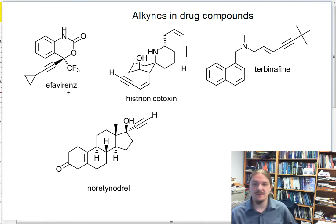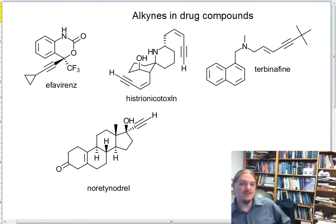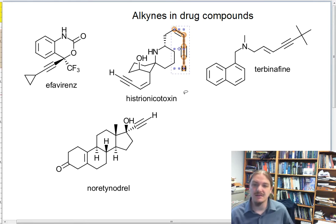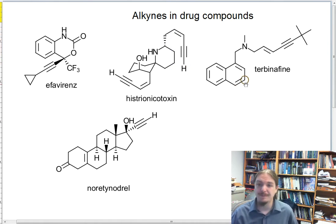So on this page, I have the structures of efavirenz, which is an antiviral compound. Histrionicotoxin is a naturally occurring toxin produced by some poisonous tree frogs. And you'll notice the alkyne and alkene functional groups together in histrionicotoxin. Many of the naturally occurring alkyne compounds are conjugated with alkenes.